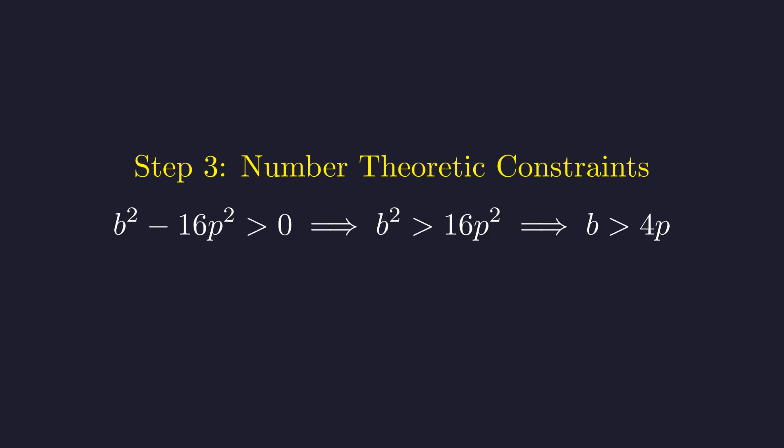First constraint, for this to be positive, the denominator has to be positive. That means b squared is bigger than 16p squared, so b is bigger than 4p.